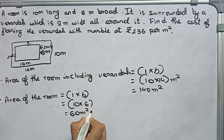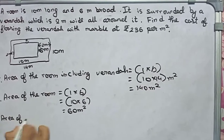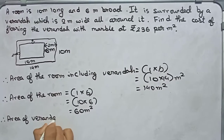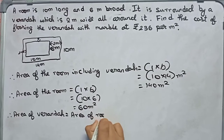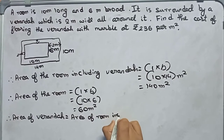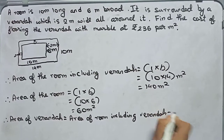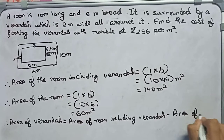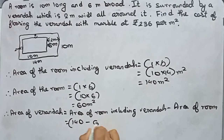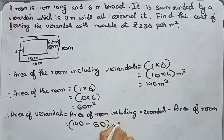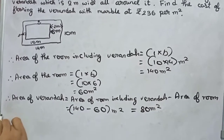Now we have to find the area of the veranda. Therefore, the area of the veranda equals the area of the room including the veranda minus the area of the room, which becomes 140 minus 60 meter square, that will be 80 meter square.